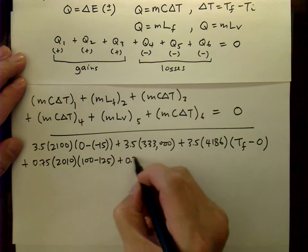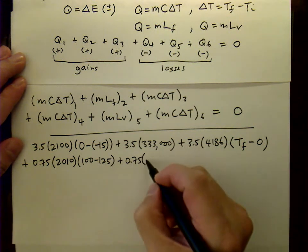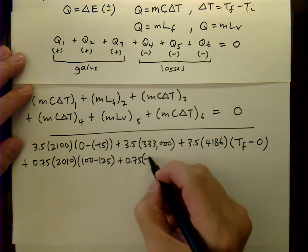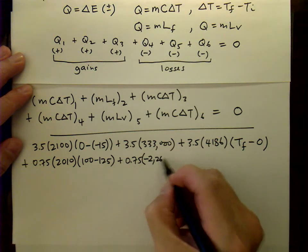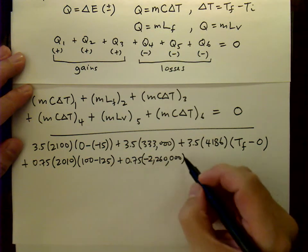Next, we have the heat associated with condensation. Now, because it's actually losing heat as it condenses, the latent heat term must be negative. And that's why we put a negative sign there.